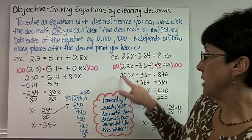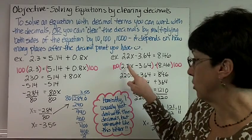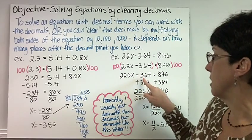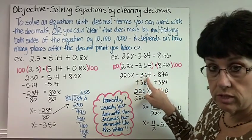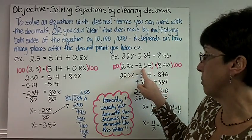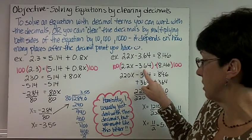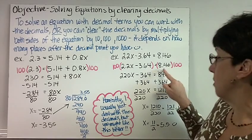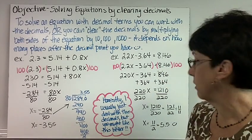100 times 2.2 is 220, because you have to move it two places, so you have to add a zero. So 220x minus 364, because when we multiply this by 100, it totally clears the decimal out, equals 846, because when we multiply this by 100, it totally clears the decimal out.